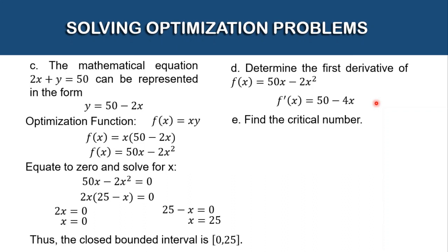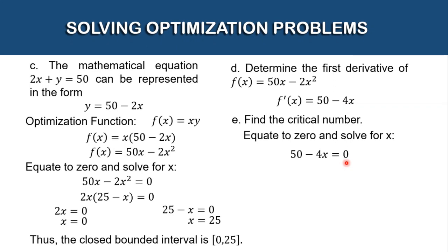To find the critical number, we equate the first derivative to zero. So 50 - 4x = 0. Moving 50 to the other side gives -4x = -50. Dividing both sides by -4 gives x = 12.5. This is our critical number.